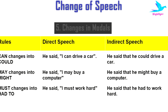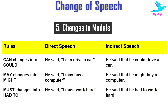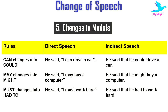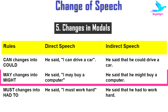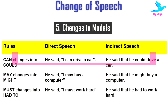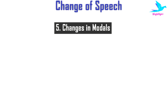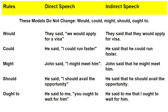Another important aspect is changing modals. First rule: 'can' changes to 'could.' For example: he said, 'I can drive a car.' In indirect speech: he said that he could drive a car. Next: 'may' changes to 'might.' He said, 'I may buy a computer.' In indirect speech: he said that he might buy a computer. Then: 'must' changes to 'had to.' He said, 'I must work hard.' In indirect speech: he said that he had to work hard.